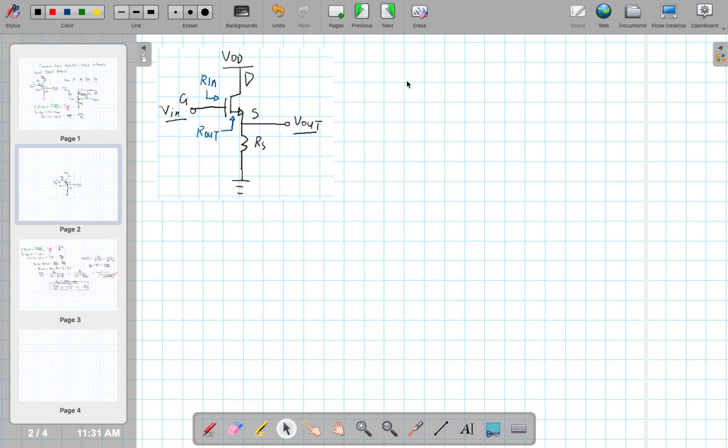So now let's take a look at the Rout. Now we want to solve for the Rout. So one thing to note is that the Rout is looking into the source terminal. So it has nothing to do with the RS. RS is external to where we're looking into the transistor. So we can completely ignore the RS.